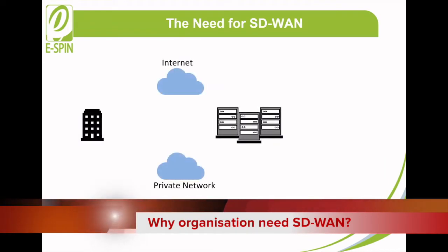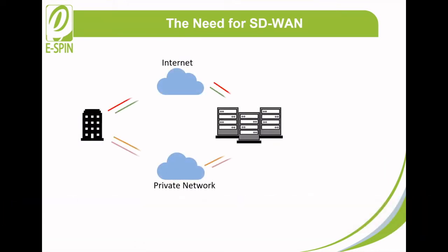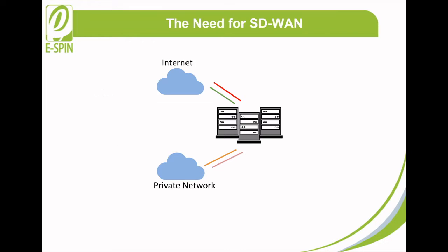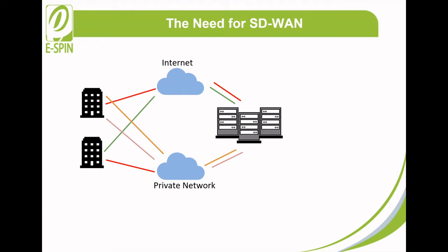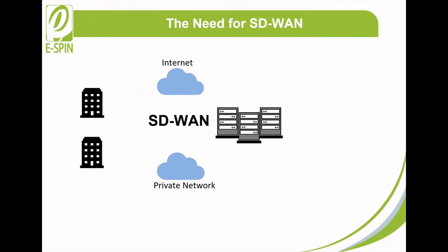When we discuss about WAN, it is about the method of connectivity. It can be broadband. Since organizations can have different locations and availability, the connectivity can involve combinations of various methods, leading to separate WANs — in other words, more networks to manage. SD-WAN simplifies the connectivity by unifying these separate WANs into one common network, managed by software.